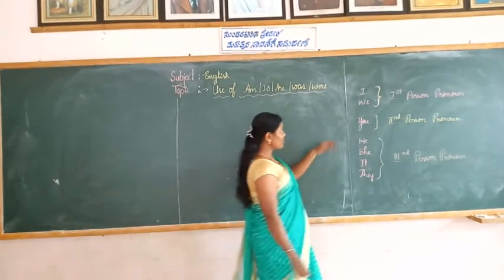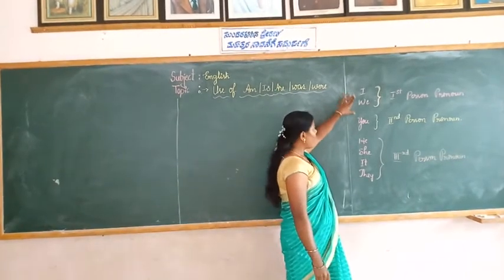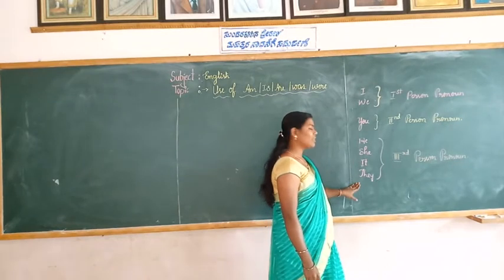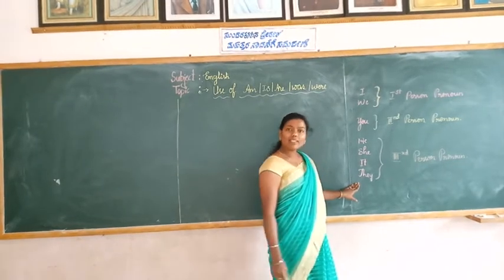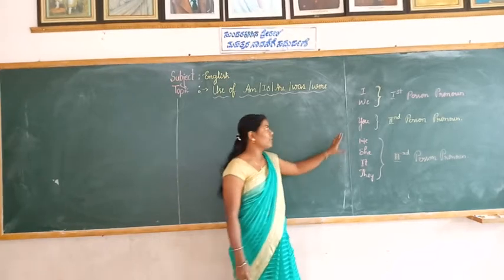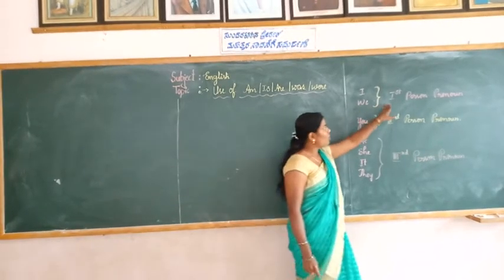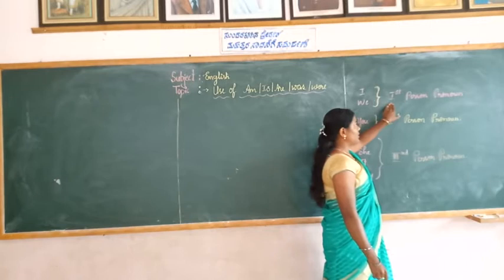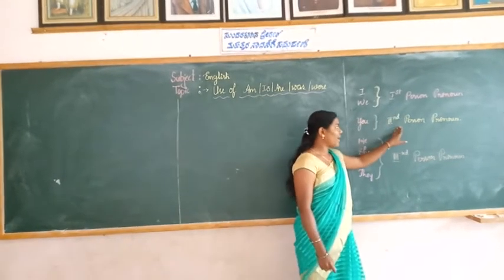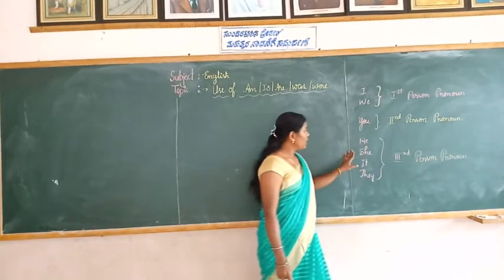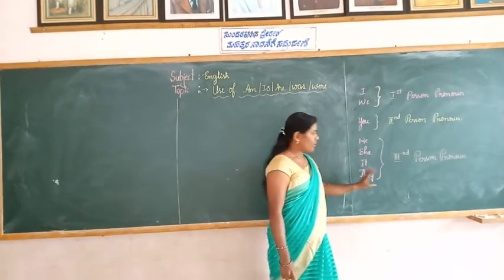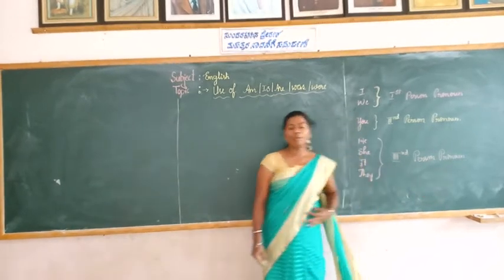First, let us learn about pronouns: I, we, you, he, she, it, they. These are called pronouns. I and we are called first person pronouns. You is called second person pronoun. He, she, it, and they are called third person pronouns.